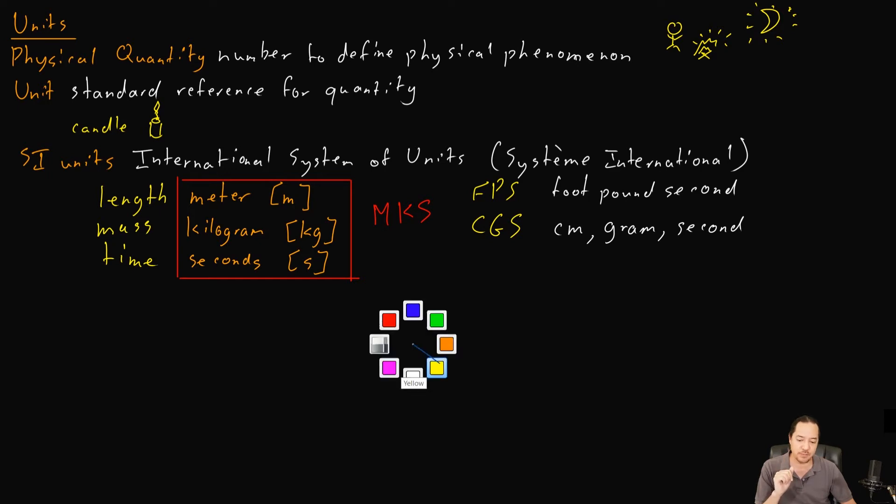MKS was the heart of the SI units, but it wasn't quite enough by itself. As people were investigating more electricity and magnetism, they discovered they needed another quantity, another fundamental quantity to describe things like charge. So we created a unit for electric current, the flow of charges, and this was called the ampere, and its symbol is the capital letter A. Combined with MKS, we created the MKSA system.